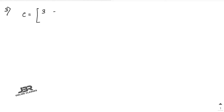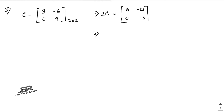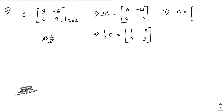Sum number 3: C is a 2x2 matrix: [3, -6, 0, 9]. Number 1: find 2C — multiply 2 with each element: 6, -12, 0, 18. Number 2: find (1/3)C — 1/3 into 3 is 1, 1/3 into -6 is -2, 1/3 into 0 is 0, 1/3 into 9 is 3. Number 3: -C — multiply -1: -3, +6, 0, -9.